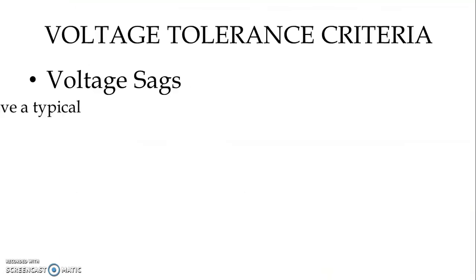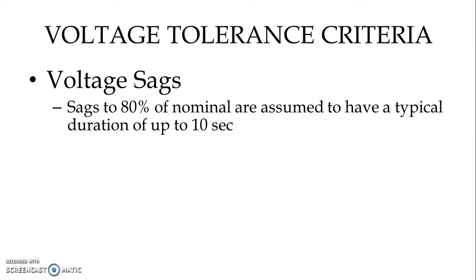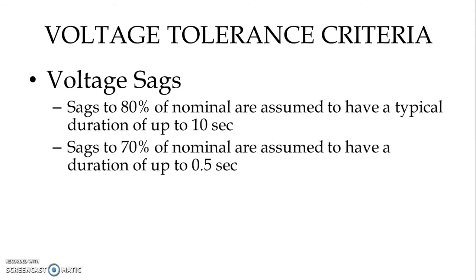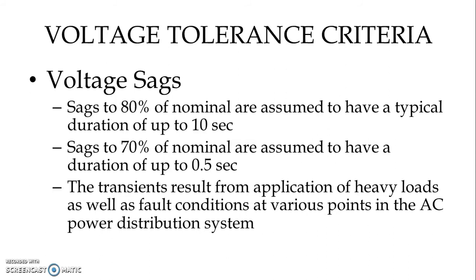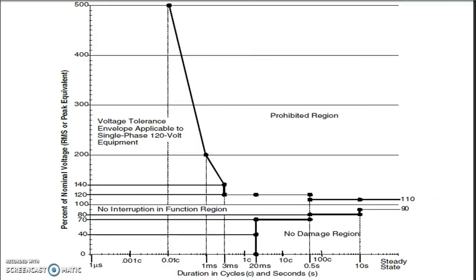Next we have voltage sags. Sags to 80 percent of the nominal are assumed to have a typical duration of up to 10 seconds. Sags to 70 percent of nominal are assumed to have a duration of up to 0.5 seconds. These transients result from the application of heavy loads as well as fault conditions at various points in the AC power distribution system. On the graph, we can see the 80 percent line for 10 seconds and the 70 percent line for 0.5 seconds.